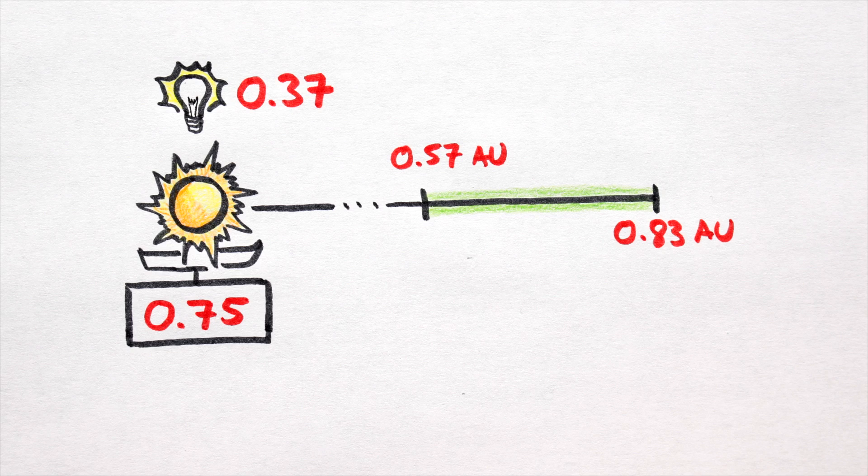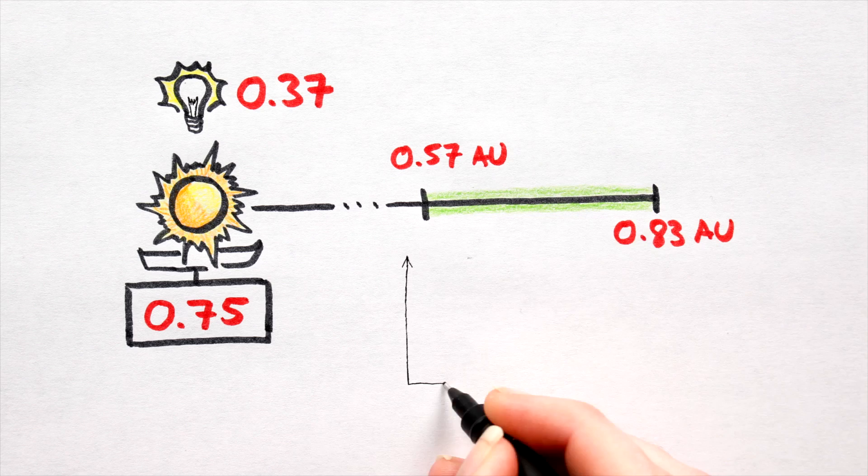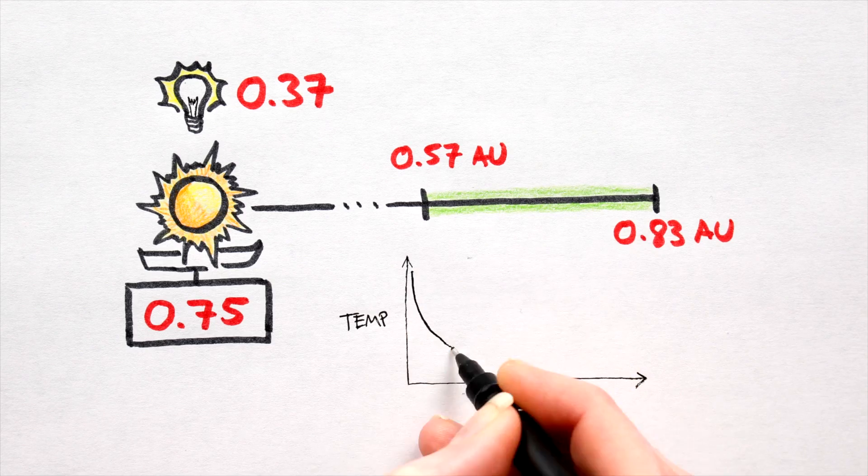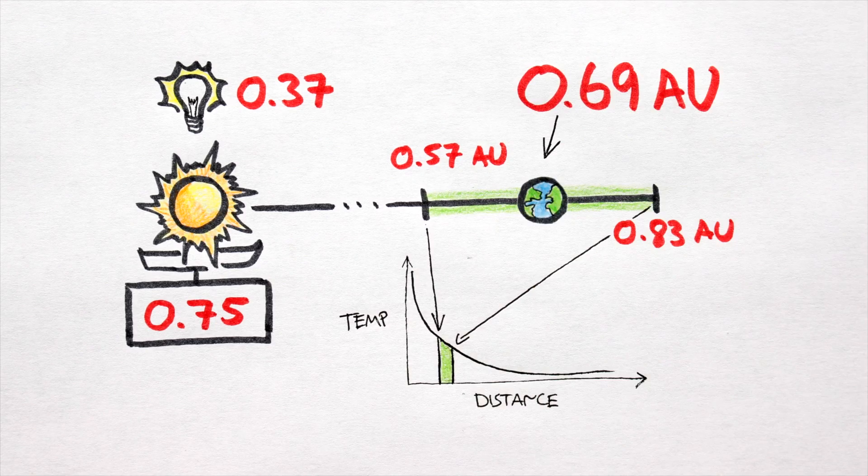Anyways, all we need to do now is pick a semi-major axis that falls within this habitable zone. Any figure will do, but bear in mind that temperature is a function of distance. I'll go with a middle of the road 0.69 AU.